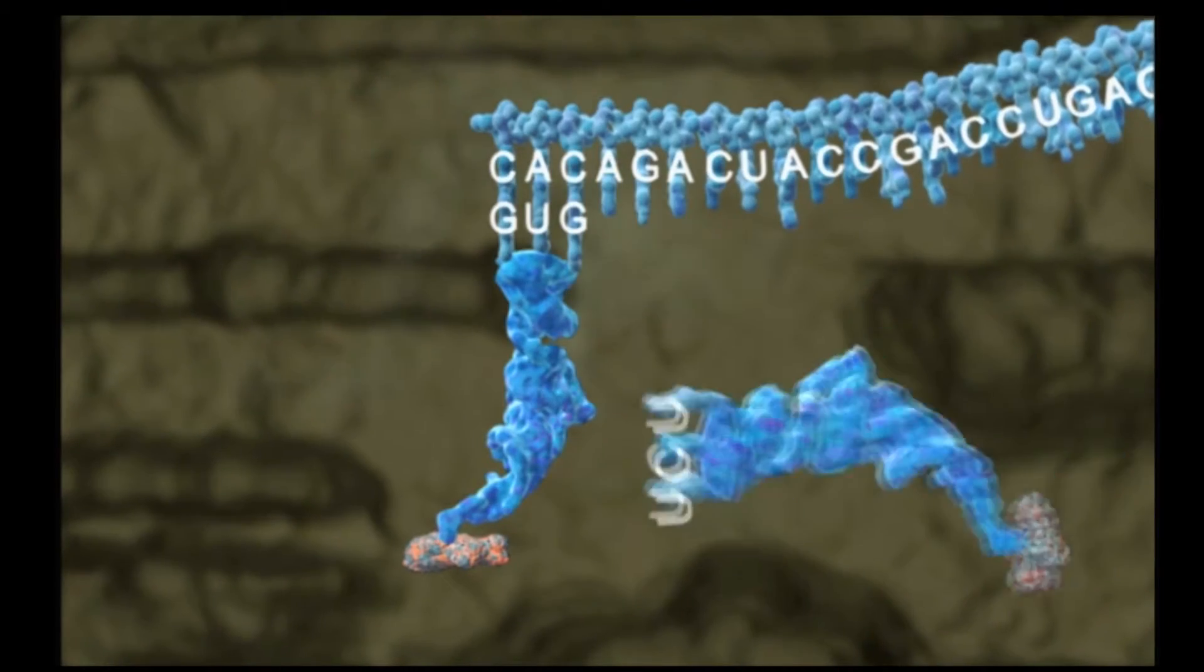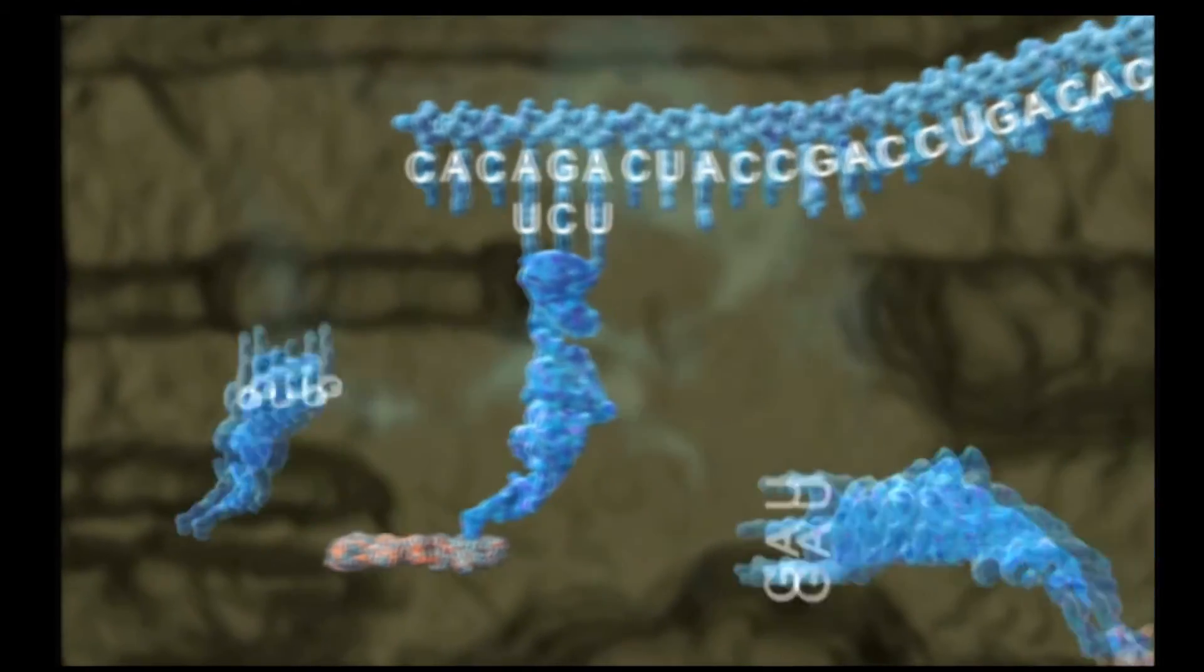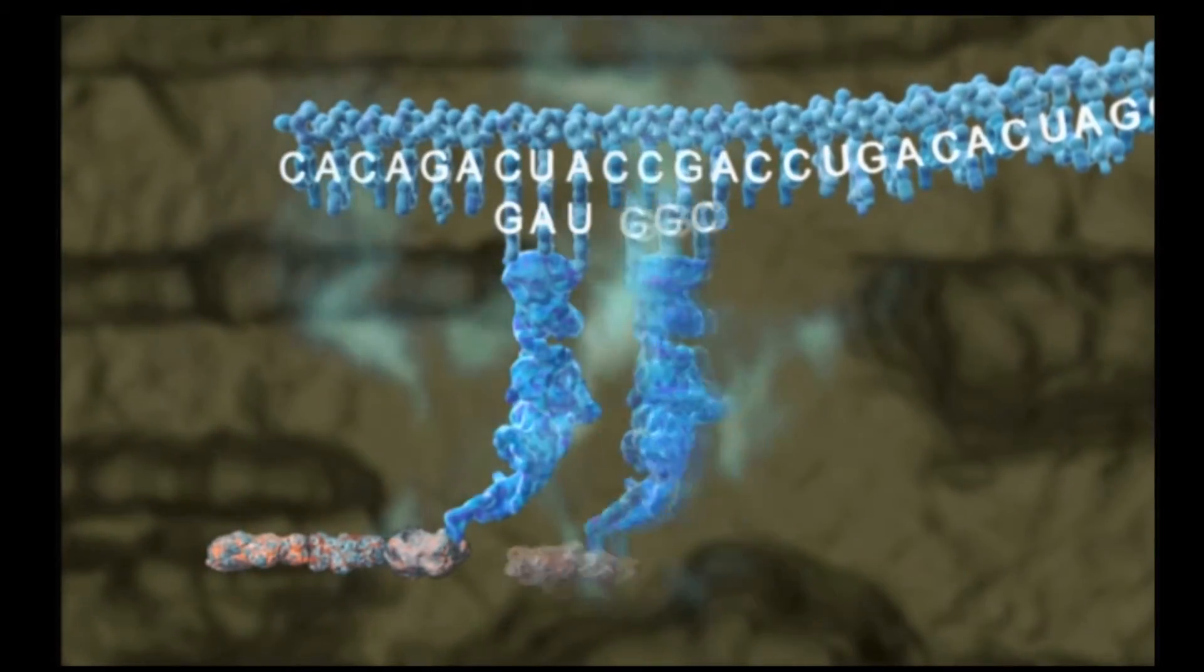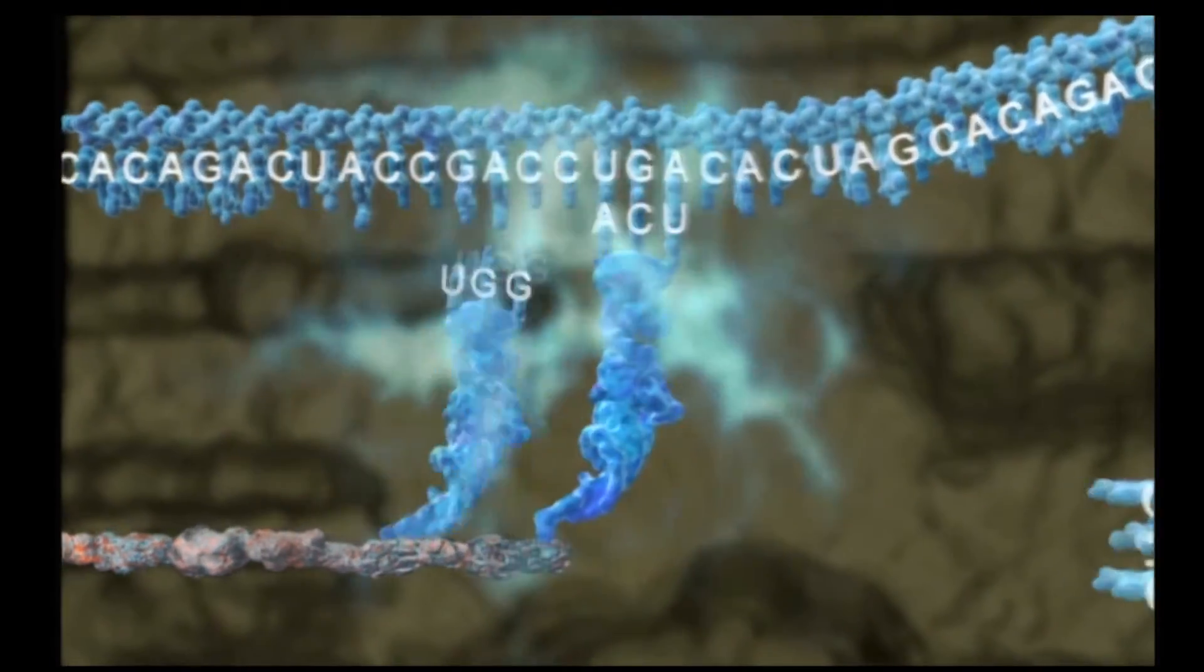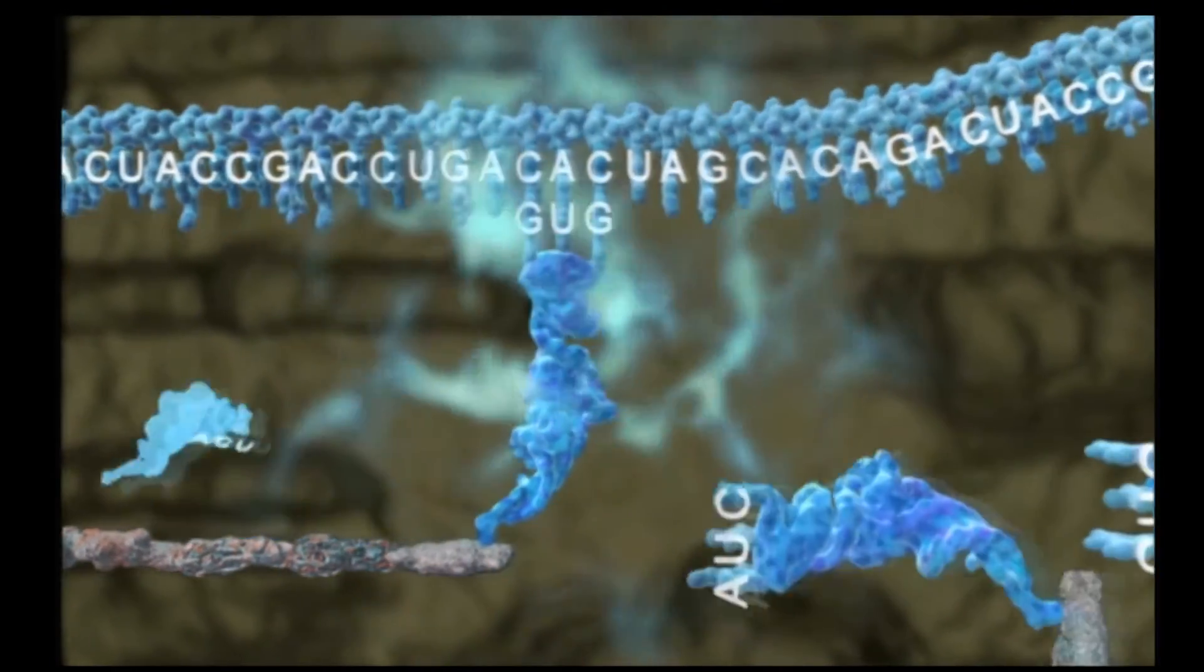As the messenger RNA transcript passes through the ribosome, the process of translation begins. During translation, a mechanical assembly line builds a specifically sequenced chain of amino acids in accord with the instructions on the transcript.